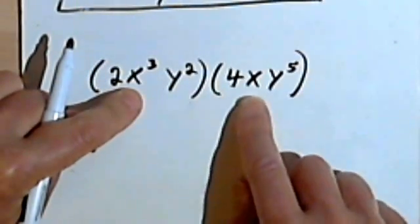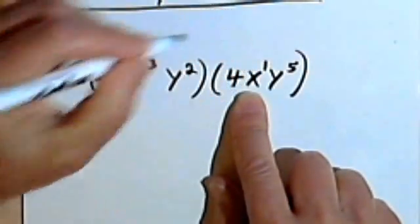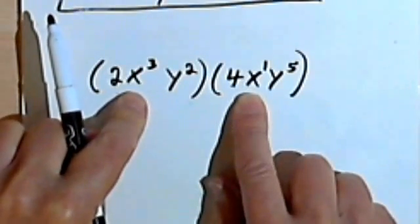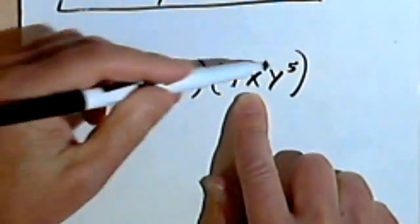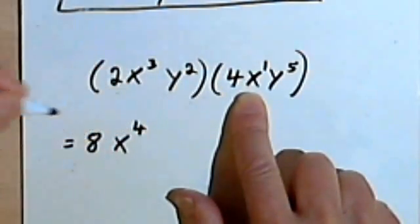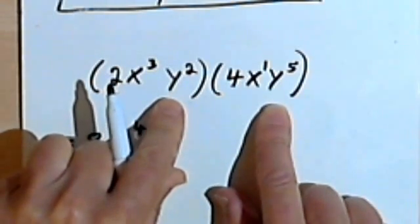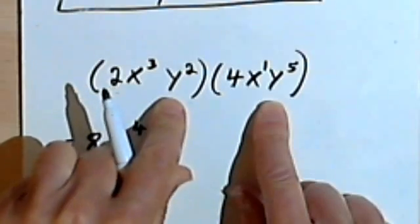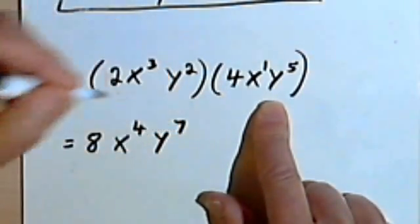x to the third times x — remember, an x is the same as x to the first, and when we multiply x to the third times x to the first, we just add their exponents. So 3 plus 1 is 4, giving us x to the fourth. Then we have y squared times y to the fifth; adding the exponents, 2 plus 5 is 7, so we get y to the seventh.